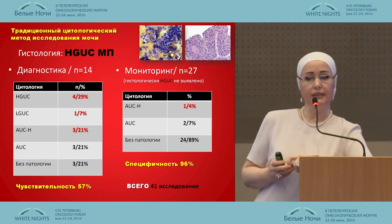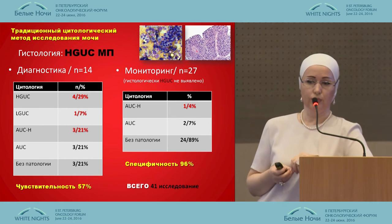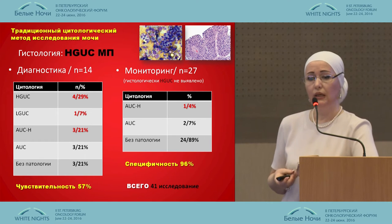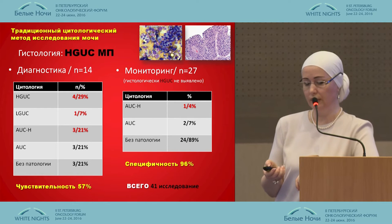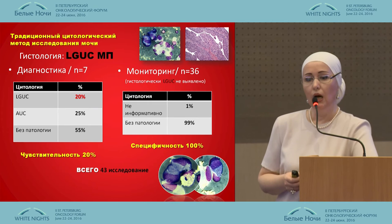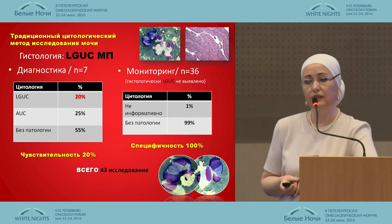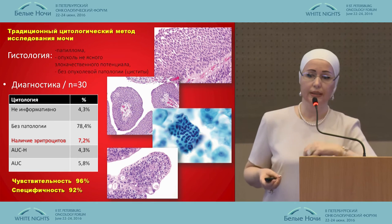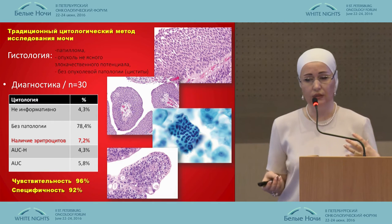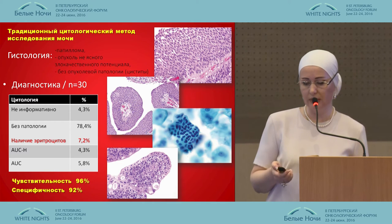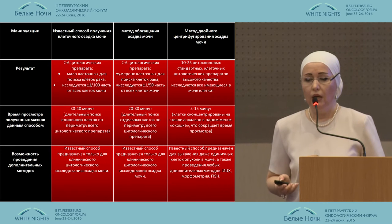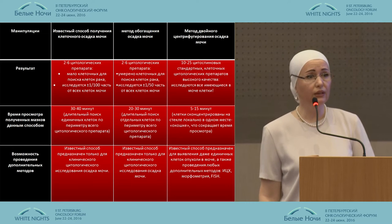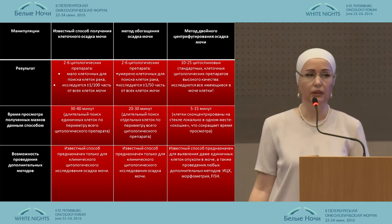Based on histology conclusions, the sensitivity at evaluation of urine was 57%, the specificity was 95%. Low-grade carcinoma sensitivity was 20% and specificity was less. For benign tumors, conventional cytology showed sensitivity of 96% and specificity of 92%. I realized that something should be changed.